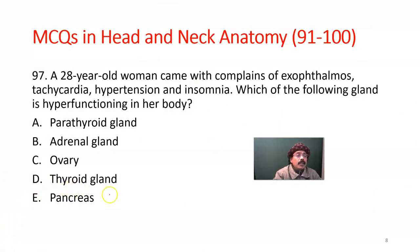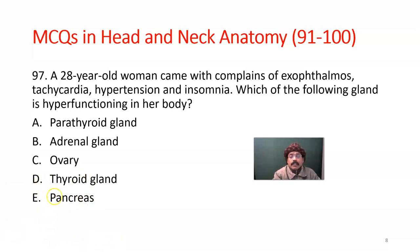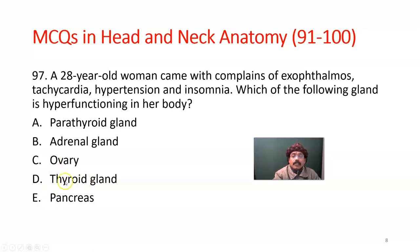A 28-year-old woman came with complaints of exophthalmos — that is, the eyeball is pushing forward — tachycardia, hypertension, and insomnia. Which of the following glands is hyperfunctioning in her body? The answer is D, the thyroid gland. Hyperfunction of the thyroid gland leads to exophthalmos, forward protruding of the eyeball, tachycardia, elevated blood pressure, and insomnia — that is, lack of sleep.